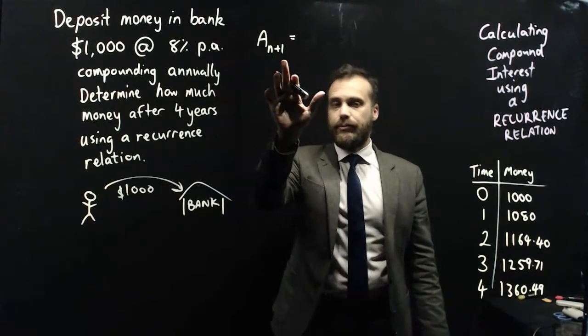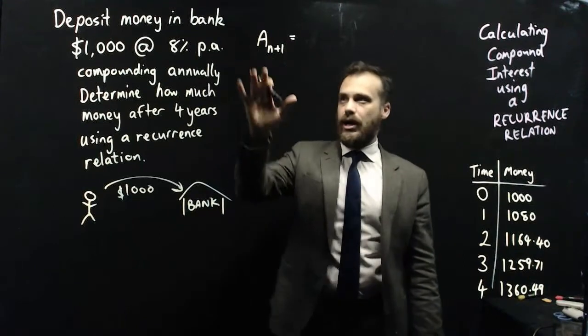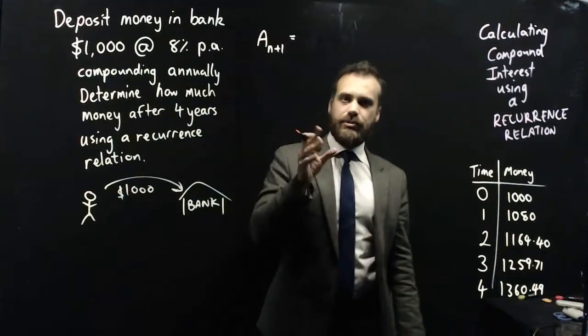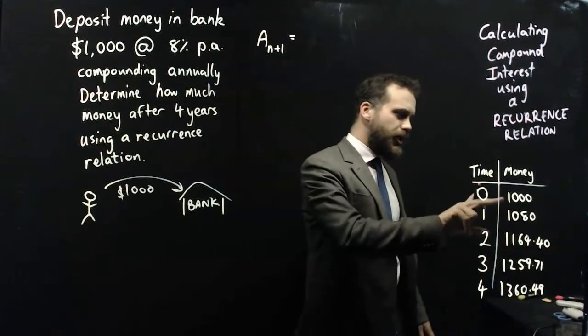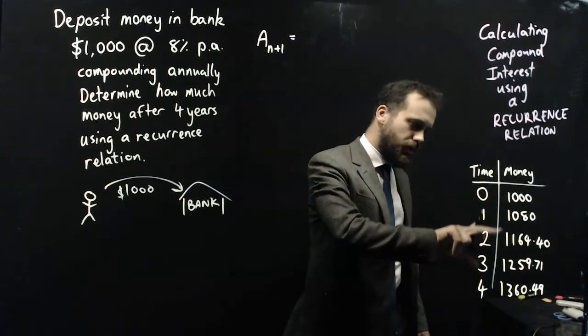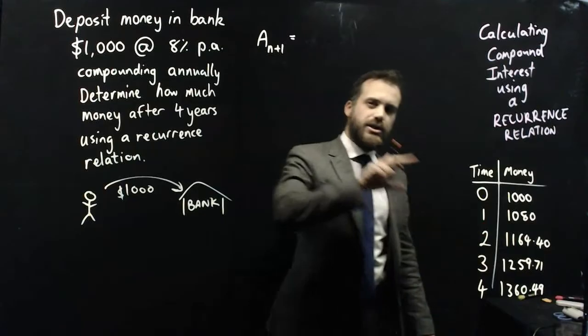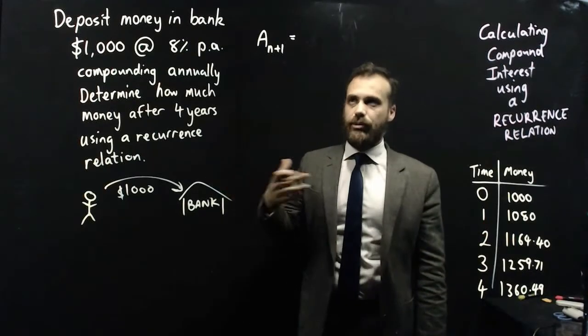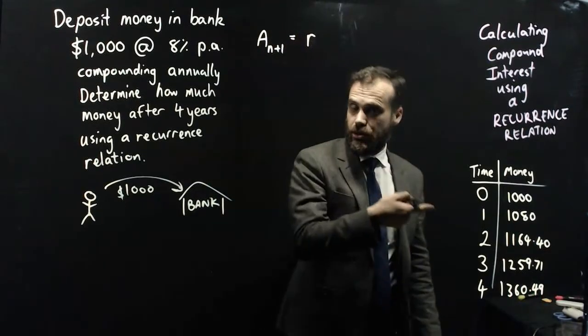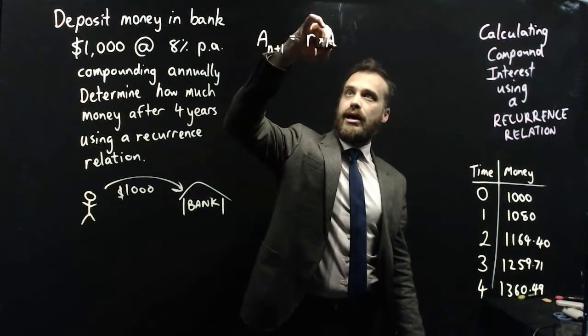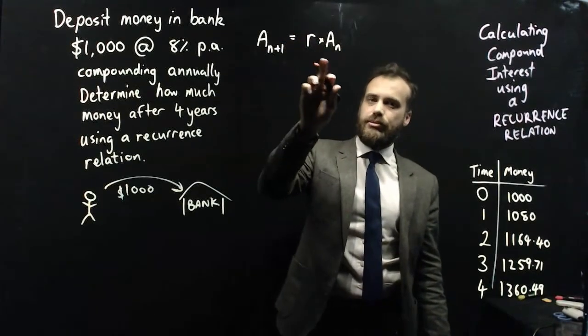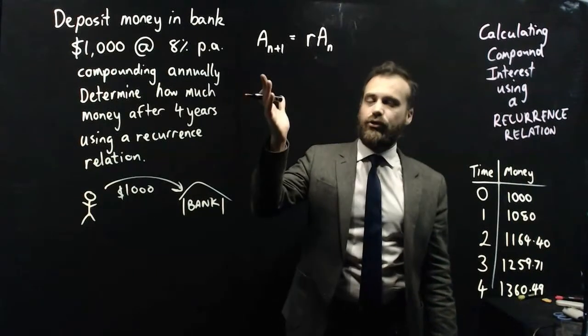A(n+1), that's the n+1th term, where A is the total amount of money in the bank. That's going to be equal to... I took each term and multiplied it by 1.08. So we've got to take each term and multiply it by what we're going to call r. So we're going to say r, which in this case was 1.08, times A(n). We don't really need that times in there because we've got a variable times a variable. So there's a neat little formula there: A(n+1) equals r times A(n).